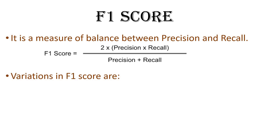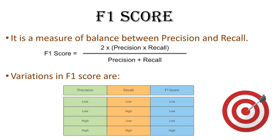A model with a higher F1 score will be more reliable compared to one with a lower F1 score. When precision and recall are both low, F1 score will be low. When one is low and the other is high, F1 score will still be low. Only when both precision and recall are high will the F1 score rise.